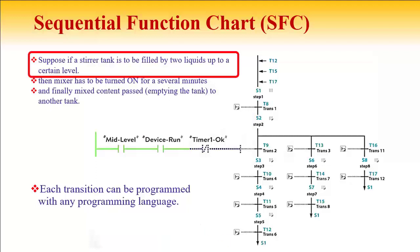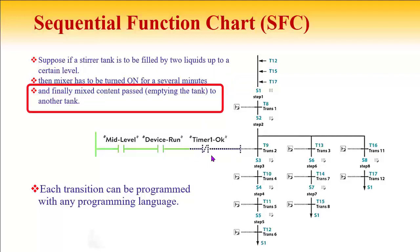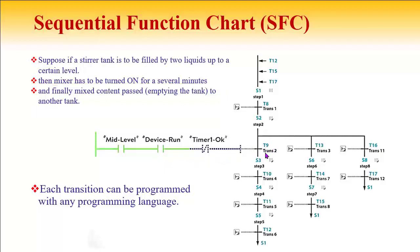For example: suppose a tank is to be filled with two liquids up to a certain level. When the level is reached, a mixer turns ON for several minutes — the timing function is handled by a timer. Finally, the mixed content passes to another tank. When all conditions of the transition are satisfied (logic 1), the next step is activated, and the mixed content is transferred to the other tank.